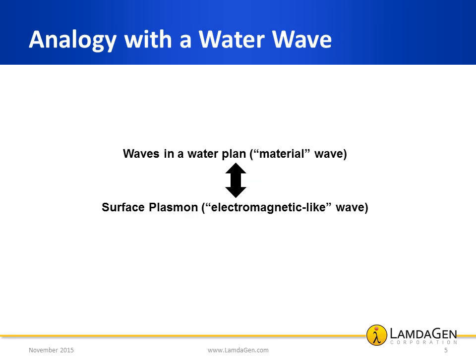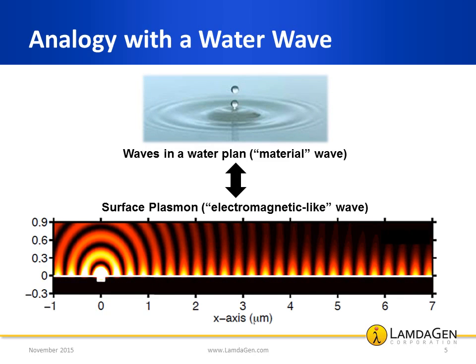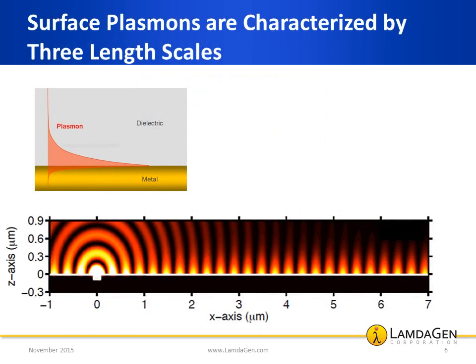To help visualize the surface plasmon wave, picture a wave produced by an object hitting the surface of water. It generates a propagating wave that extends away from the splash point. Analogous to the water waves, in the case of surface plasmons, we can identify three characteristic distances that are pictured in the schematic shown here.